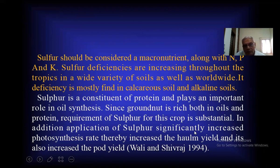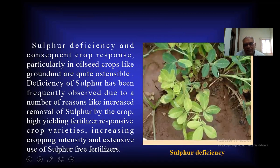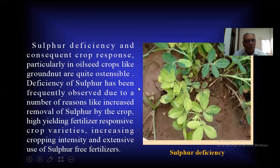Application of sulfur significantly increases the photosynthesis rate, thereby increasing the pod yield and also the oil yield, as reported by Vali and Sivaraj in 1994. Sulfur deficiency in groundnut is observed in the top leaves. Sulfur deficiency and consequent crop response, particularly in oilseed crops like groundnut, are quite evident. Deficiency of sulfur has been frequently observed due to increased removal of sulfur by the crop, high-yielding fertilizer-responsive crop varieties, increasing cropping intensity, and extensive use of sulfur-free fertilizers.